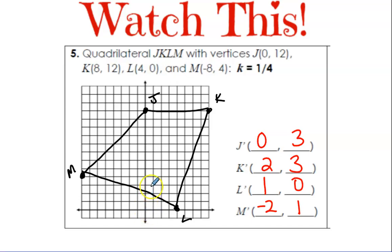0, 3, 0, 3 is my new J prime. There's my new K prime. There's my new L prime. There's my new M prime. And that's my new shape. And sometimes they overlap. But this makes sense. A fraction means you're going to shrink. And we did. So that's how you graph a dilation.